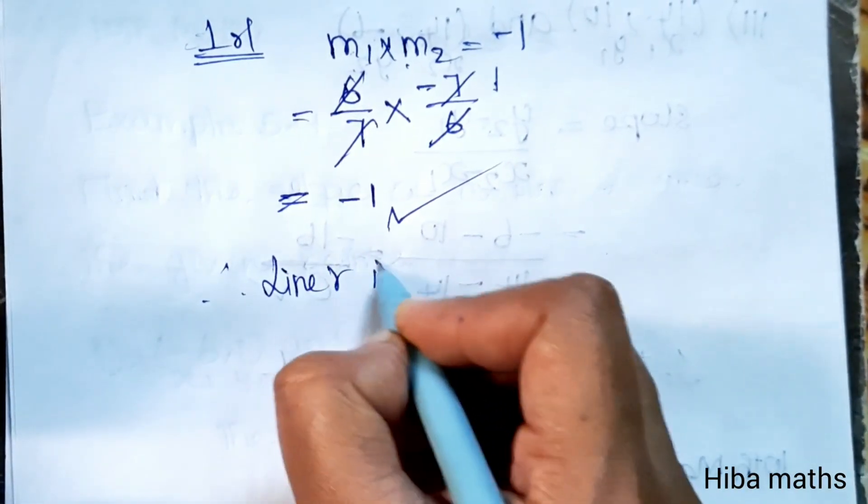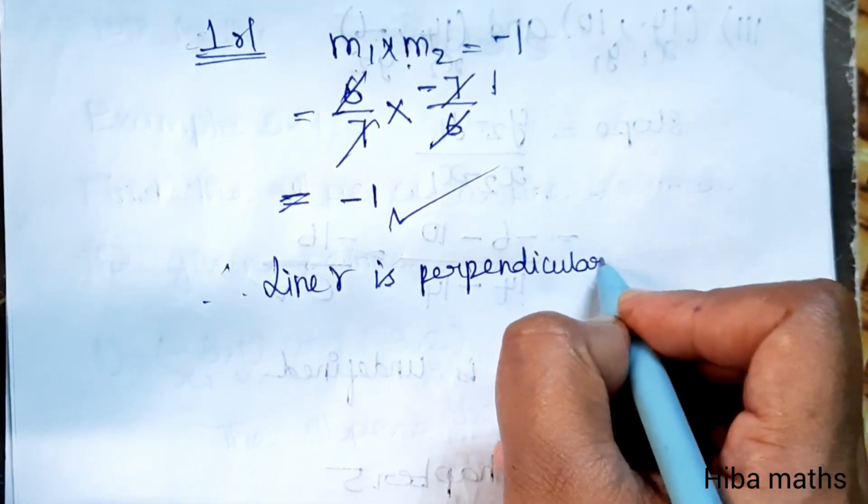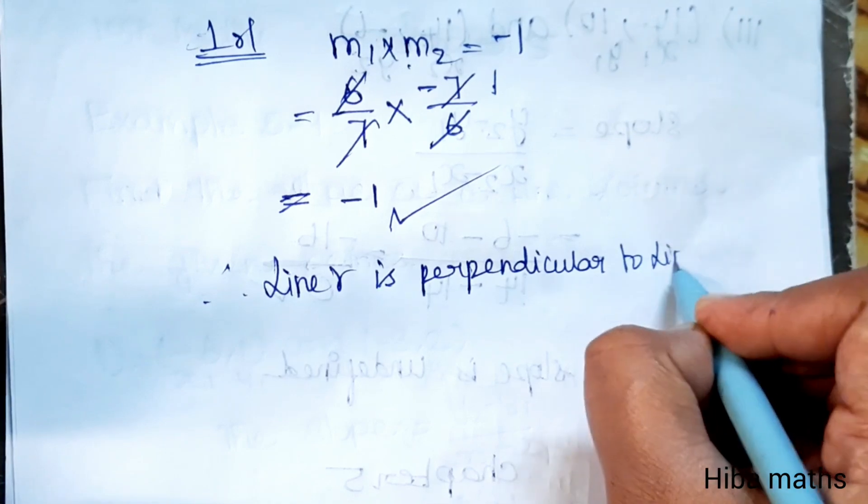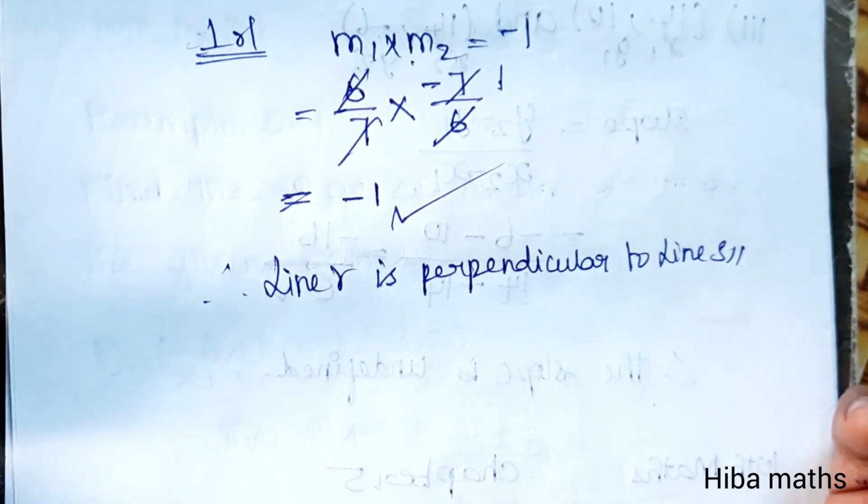line R is perpendicular to line S. I hope everyone understands. Thank you so much for watching.